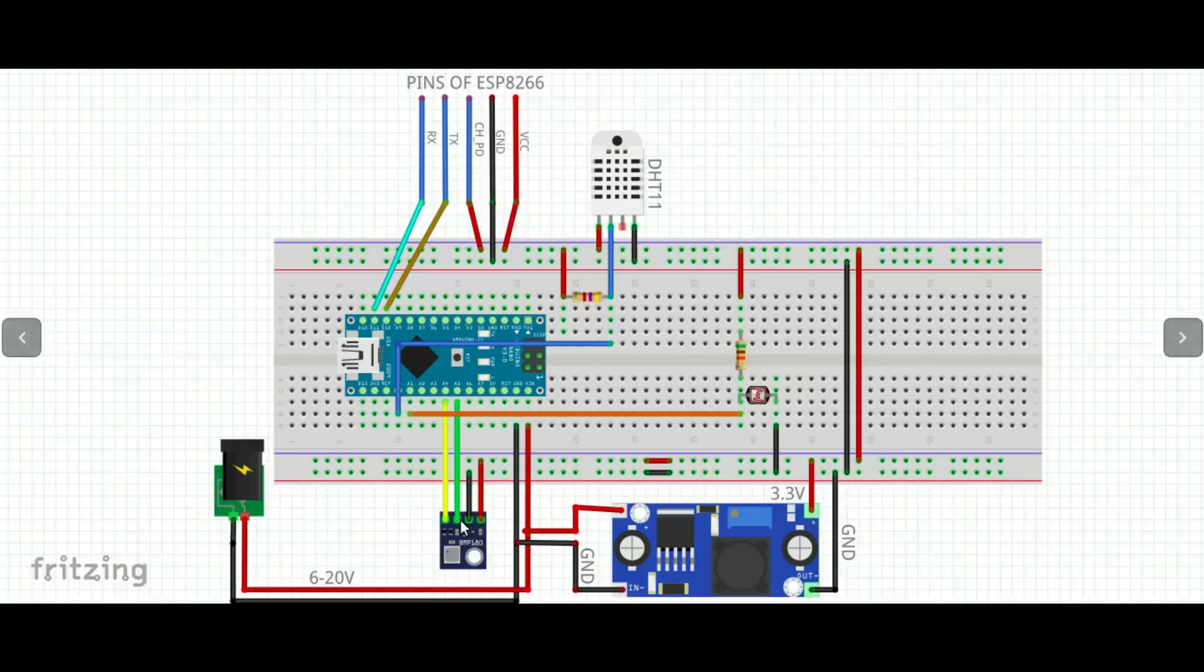Connect SCL to A5 and SDA to A4 pins of Arduino Nano. For the light intensity sensor, connect LDR and resistor in a voltage divider fashion and connect the node to A1 pin. For the humidity sensor connect its VCC and ground to 3.3 volt and ground rail. Connect a pull-up resistor and connect the node to A0 pin of Arduino Nano.